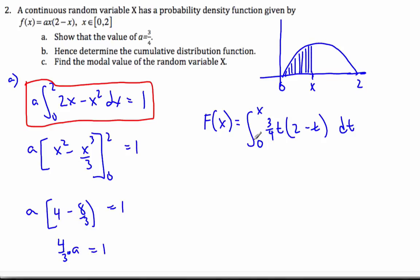So I want to find the integral of this. Well, if I do some, pull out my 3 quarters, 0 to X, and I know I have 2T minus T squared dT. And then I go about and I will take my integral. So I get 3 quarters, I take the integral, I get T squared minus T cubed over 3, from 0 to X.